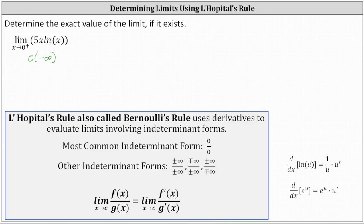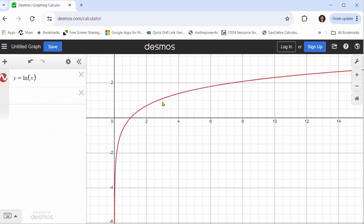If you're wondering where the negative infinity came from, if we take a look at the graph of y equals natural log x, notice as we approach x equals zero from the right, we are approaching negative infinity.